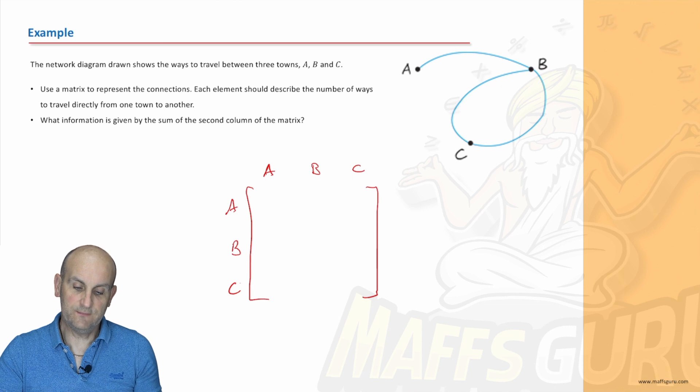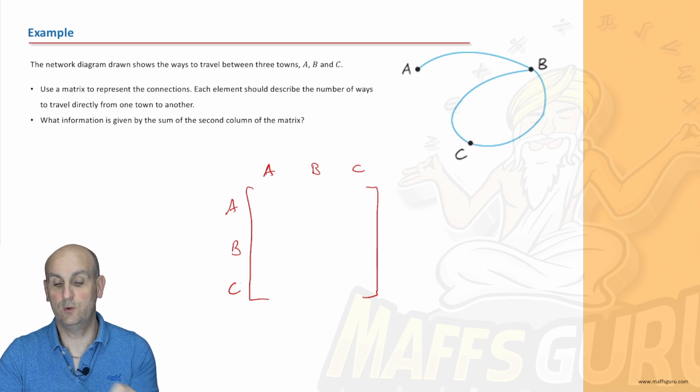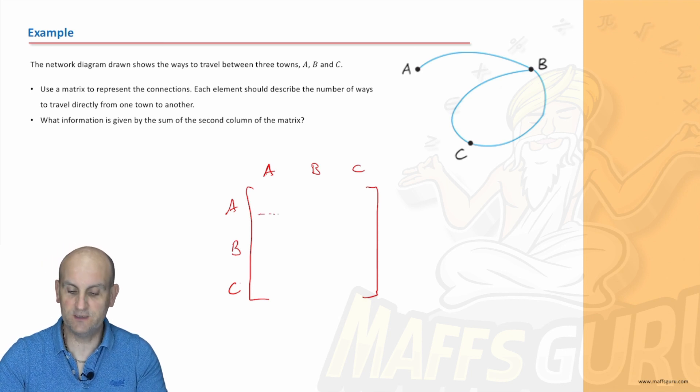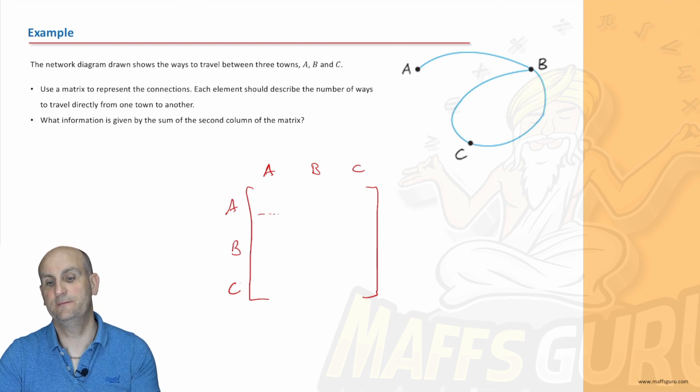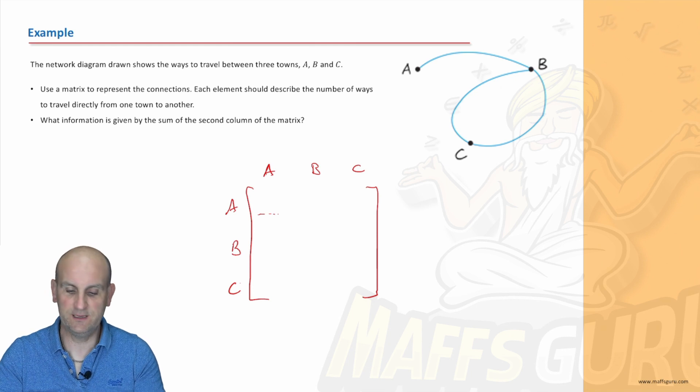It says each element described the number of ways to travel directly from one town to another. Okay so let's look at this first box here. How many ways are there to travel from A to A? Well in this particular instance if we had that way it would be described by what we call a loop. Yes that would be a connection that would basically go around in a loop but because we can't get from A to A I'm going to write zero.